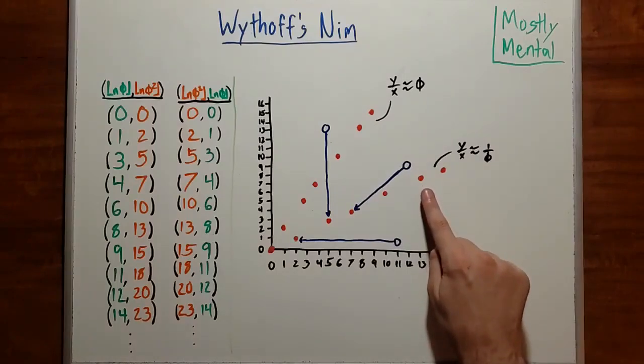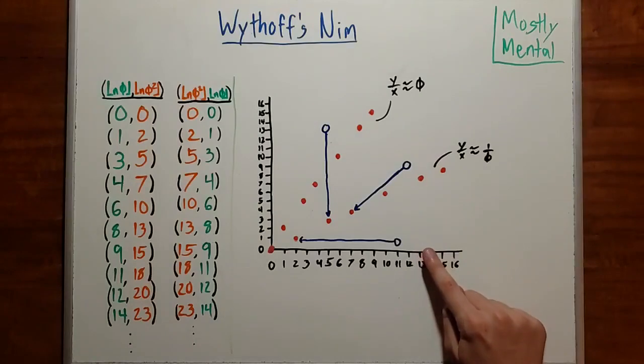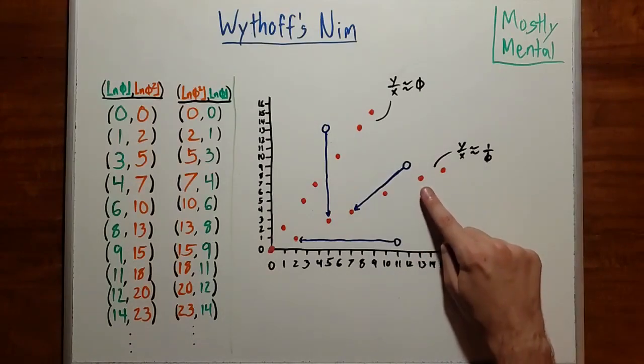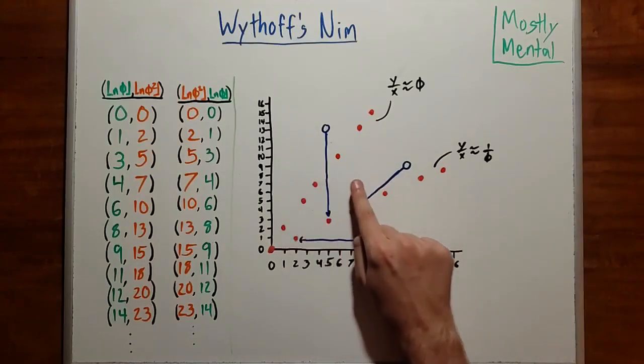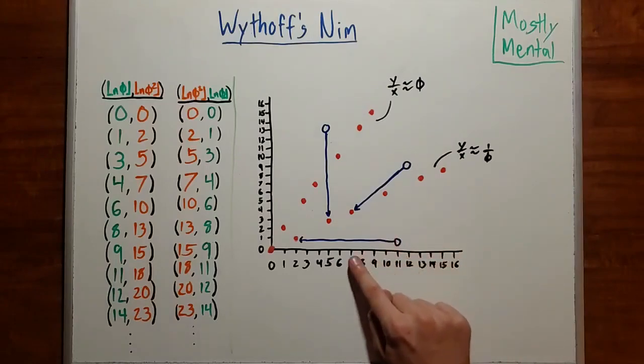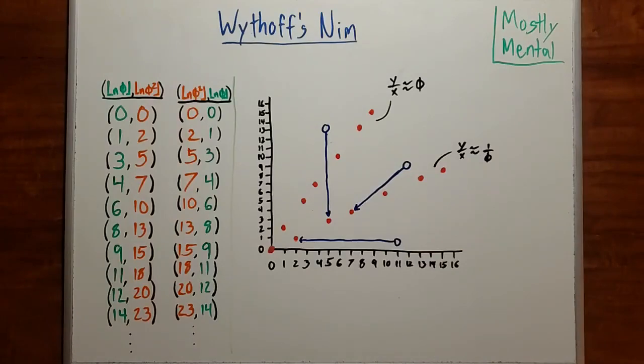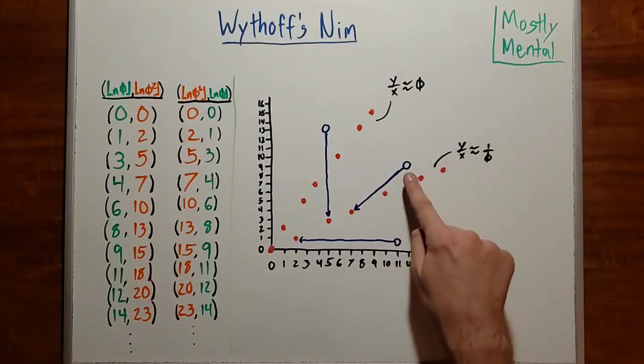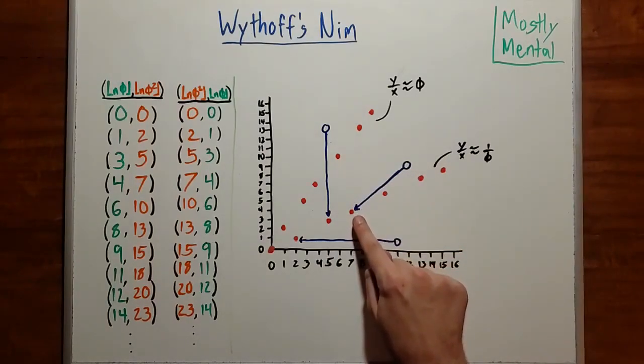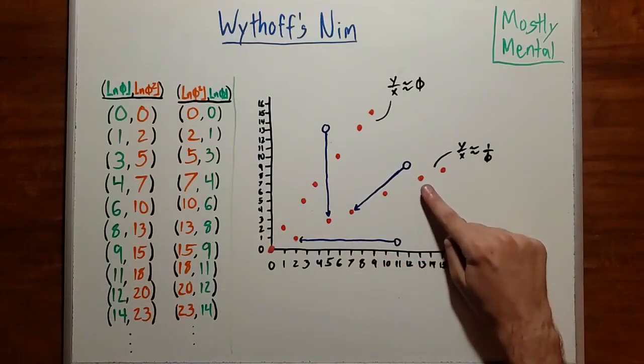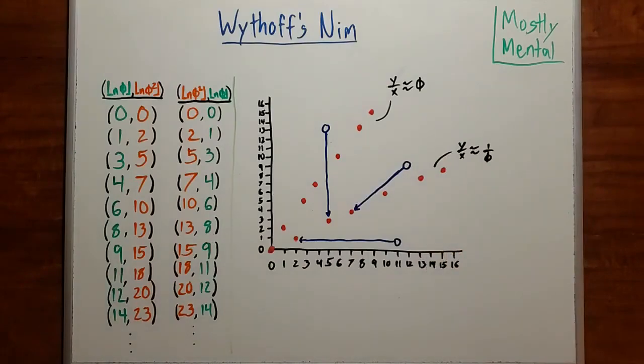What if we're actually on one of the red points? Well, we won't be able to go down to another red point, since each x coordinate only appears once. We can't go left, since each y coordinate only appears once. And we can't go diagonally, since each difference only appears once. So we can't reach another of our points. That means that from any position that isn't a red point, we can always reach a red point. But from any of the red points, we're forced to step away. And that's how we defined our P and N positions. So all these red points, which we've defined by our Beatty sequences, are the P positions. And everything else on this plot is an N position.